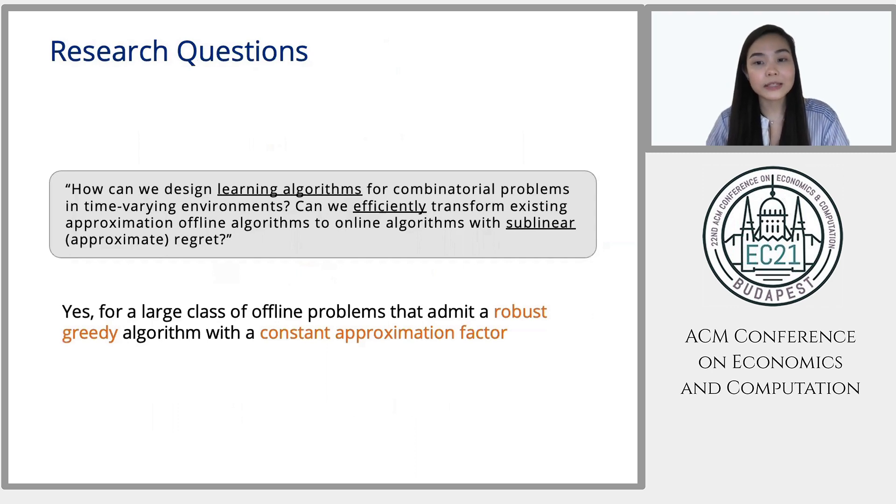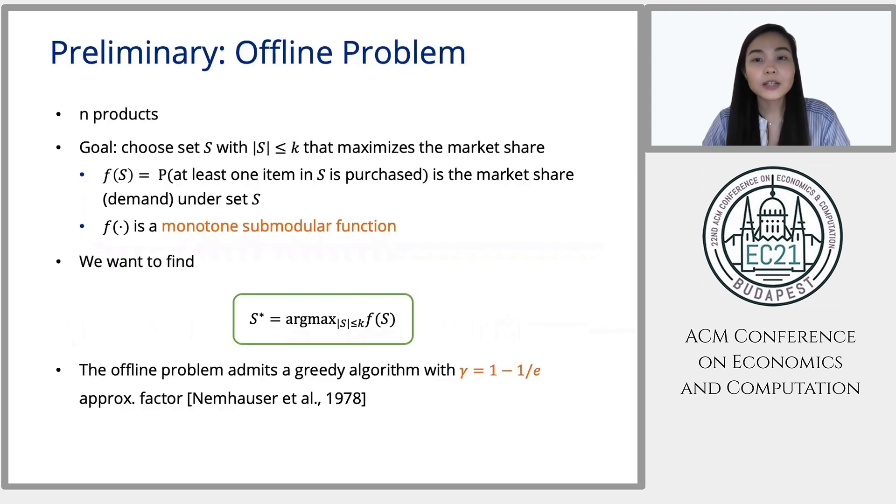And I will use one of the previous examples, which is the assortment planning problem, to explain more about the characteristic of the problems that fit to our framework and illustrate our technique. So I'll start by explaining the assortment planning problem. So in the assortment planning problem, we have N products. We want to choose a set S of products with size at most K that maximizes the market share or the probability of purchase in this case. So here F of S is the probability that at least one of the products in S is purchased. And we assume that F is a monotone submodular function. We want to find the optimal set of products S star that maximizes F of S. So this is how we define our offline problem.